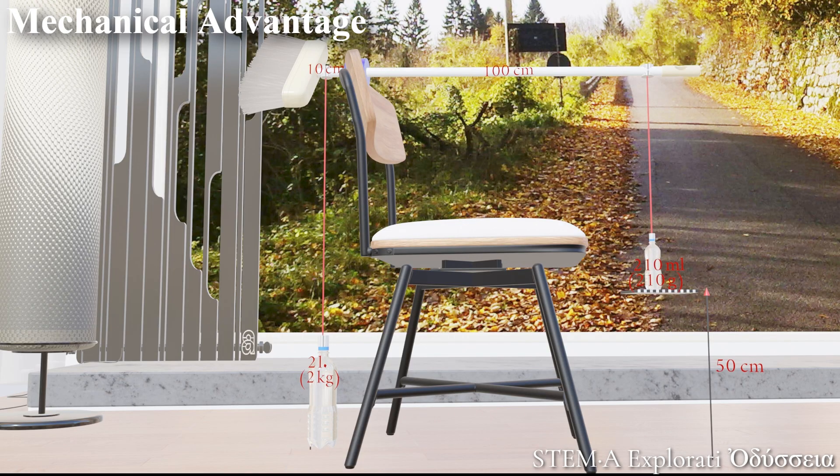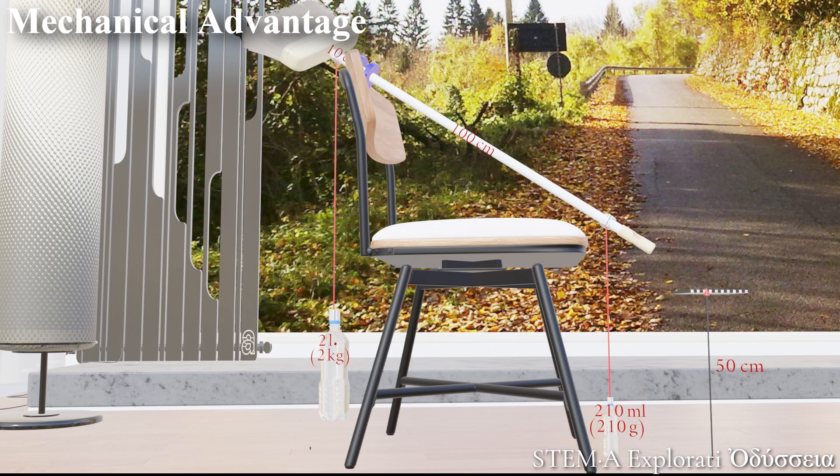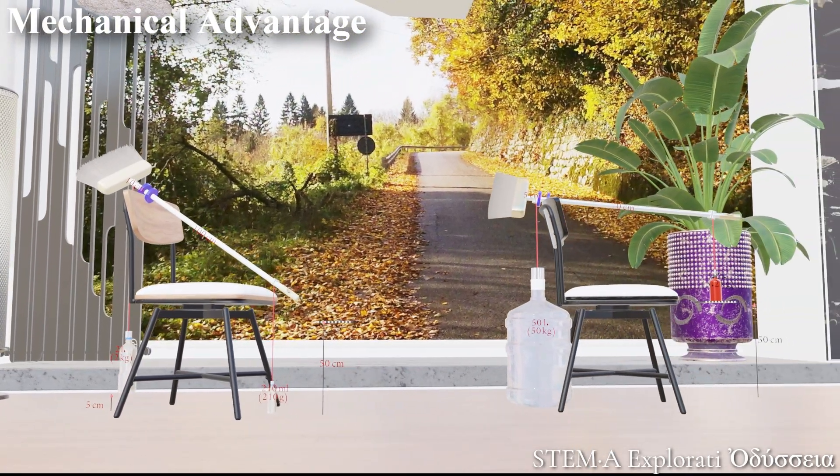Now using a broomstick as a lever and a small 200 milliliters bottle on one side and a heavy two liter bottle on the other. Will this little bottle be able to lift a big one? Well, it did manage to lift the two liter bottle by five centimeters.